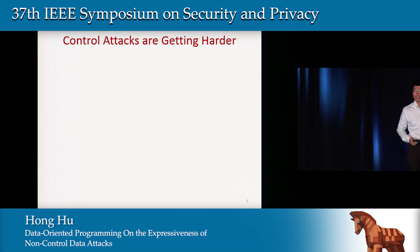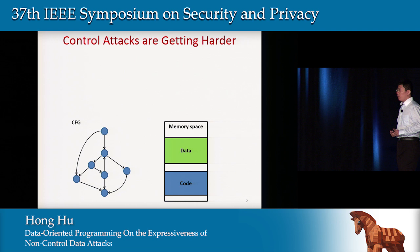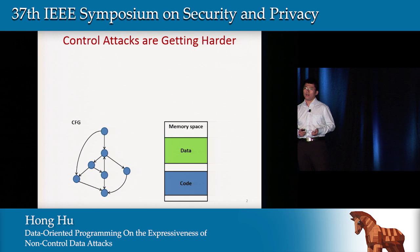Nowadays, control attacks are getting harder. Given a vulnerable program with a memory error, you can draw its control flow graph and the memory space in this way. Originally, attackers could place malicious code in the data section and directly jump to it. This is a so-called code injection attack.